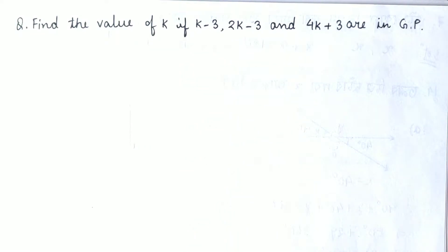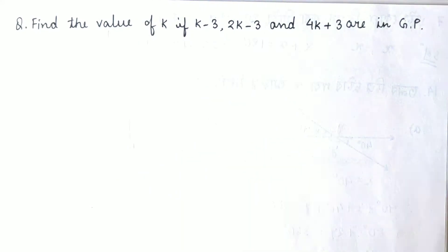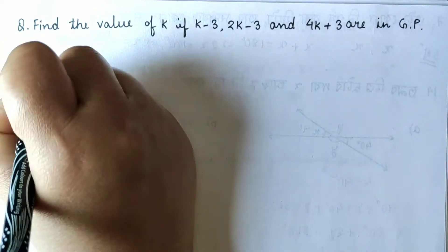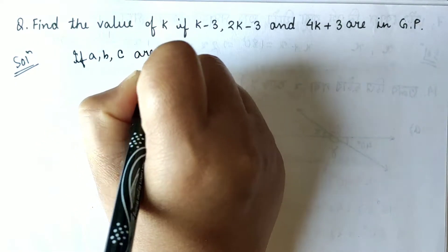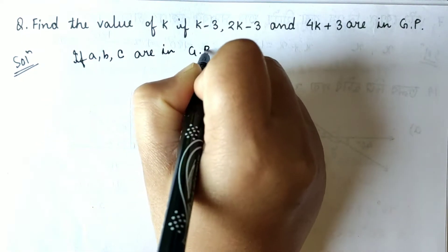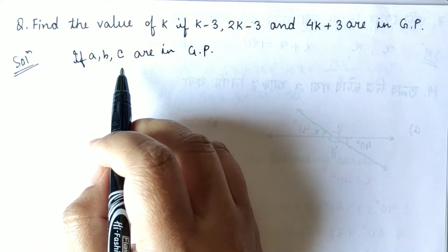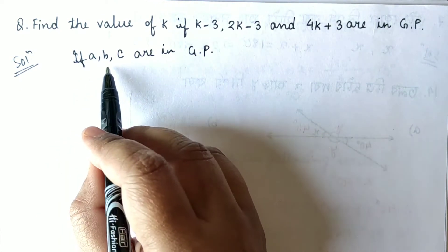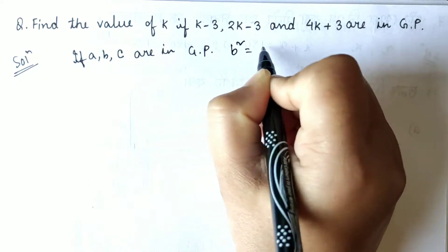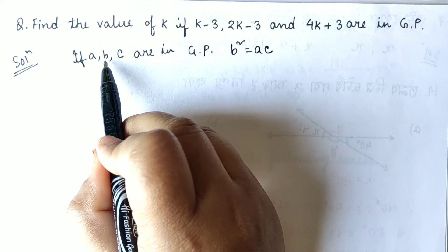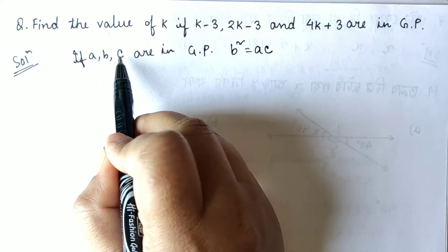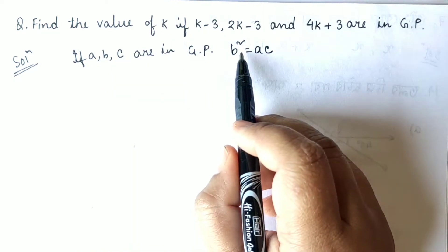Find the value of k if (k minus 3), (2k minus 3), and (4k plus 3) are in GP. If three numbers a, b, c are in GP, we can write b squared equal to ac — that means the middle term squared equals the product of the extreme terms.